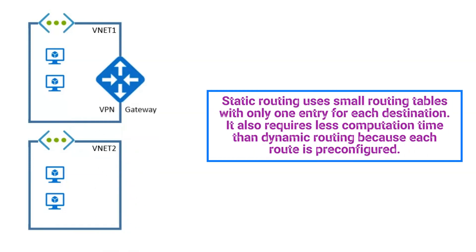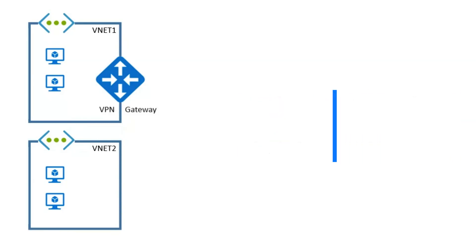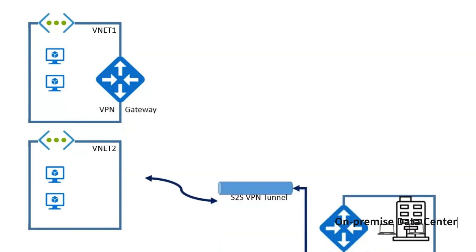Static routing uses small routing tables with only one entry for each destination. It requires less computational time than dynamic routing because each route is pre-configured. The next part of the question states there is a site-to-site VPN connection between the on-premises network and VNet1.